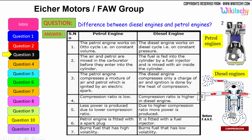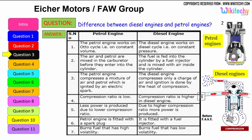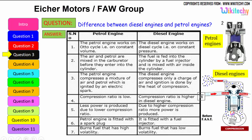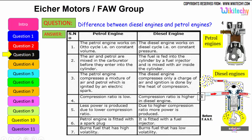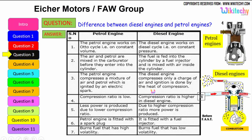The petrol engine burns fuel with high volatility — petrol is highly volatile. Whereas the diesel engine burns low volatility liquid, so diesel is a low volatile liquid. These are some of the differences between the petrol engine and the diesel engine.